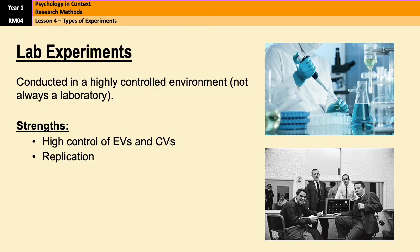Now, the strengths of a lab experiment are the fact that they have lots of control over extraneous variables and confounding variables, which means that researchers will have, hopefully, managed to reduce their impact on the DV. And also, the fact that because everything is so controlled, there's a high level of replication, which means that another researcher can come in and repeat the study and that adds validity to the initial findings.